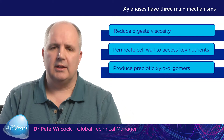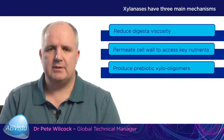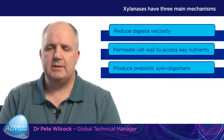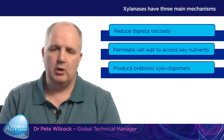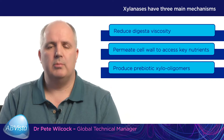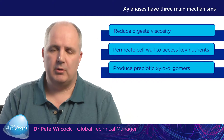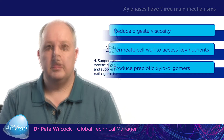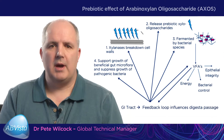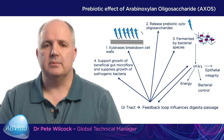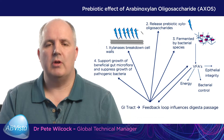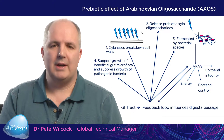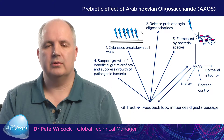And finally — which we're going to concentrate on in the rest of the video — is the ability to produce prebiotic xylooligomers through the breakdown of long chain arabinoxylans using xylanase. We're going to talk in more detail about the third mechanism: the prebiotic effect of the arabinoxylan oligosaccharide, or as we'll refer to it going forward, AXOS.